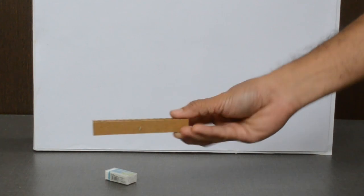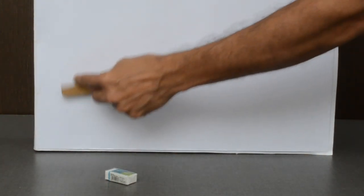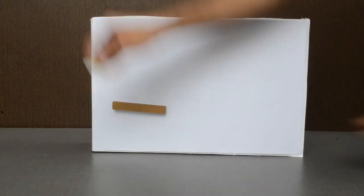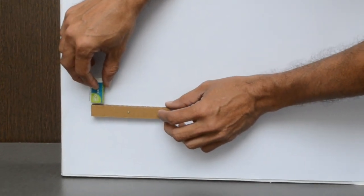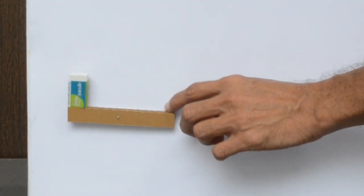Let us pin this brown strip in the center. I will place the eraser on the left side. I can lift or lower the eraser by applying force on the right side.